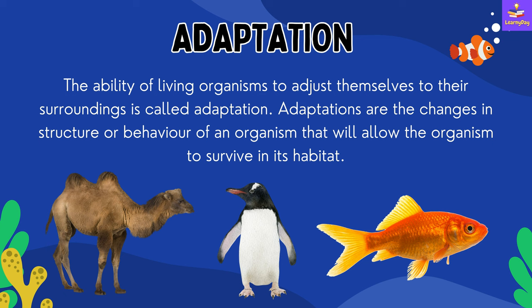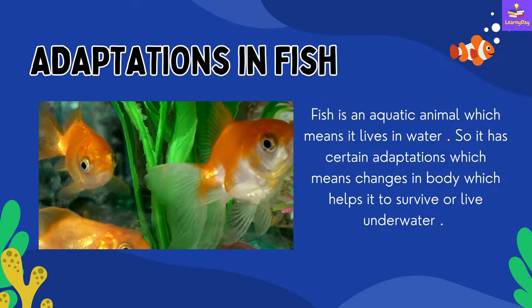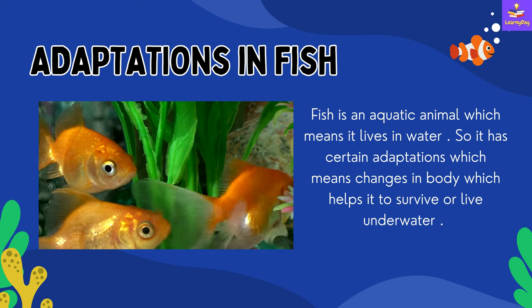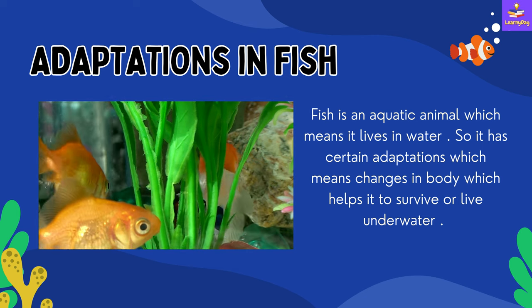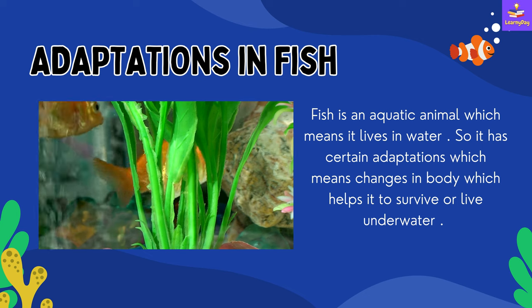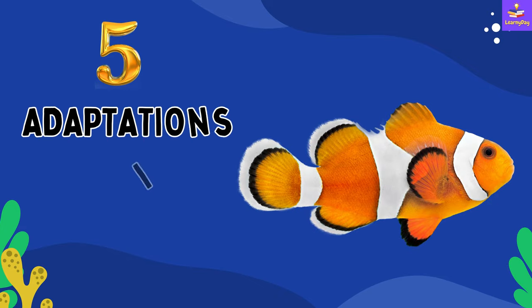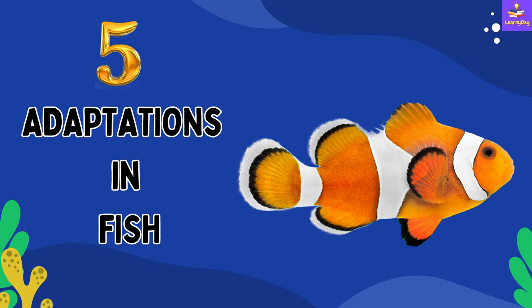For example, a camel is adapted to live in desert areas. A penguin is adapted to live in cold areas, and fishes are adapted to live in water. If we talk about the adaptations in fish, fish is an aquatic animal which means it lives in water. It has certain adaptations — changes in body — which help it to survive or live underwater. Now we will talk about the five adaptations in fish, which means five body changes which allow the fishes to live in water.